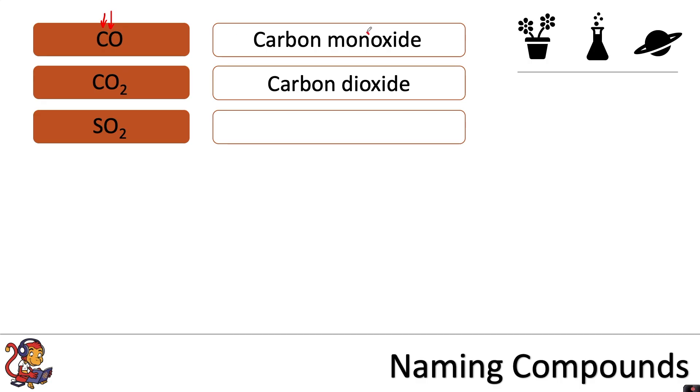So to make it clear, because it's still carbon and oxygen bonding together, to make it clear that this one is the one with just one oxygen, they put 'mon' in front because 'mono' means single. And to make it clear this is the one with two oxygens, they put the 'di' in front.